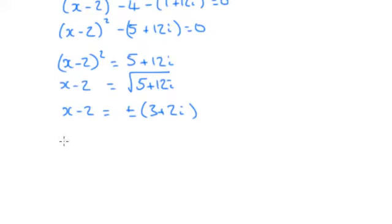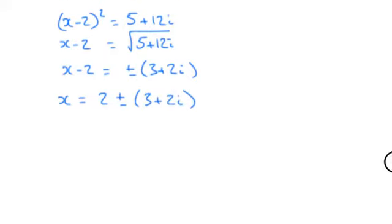So x is equal to 2 plus or minus 3 plus 2i. You can work that out if you want. You've actually got full marks if you stopped there. But it's nice to have it as actual two complex numbers.